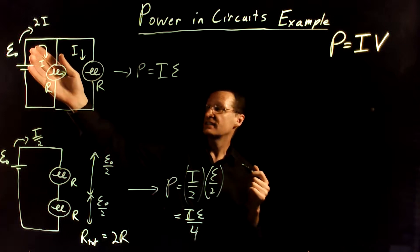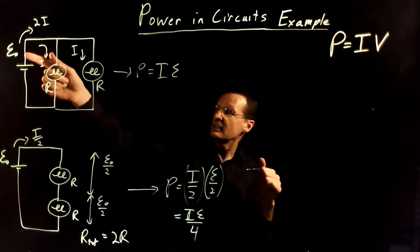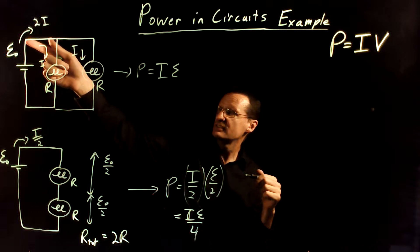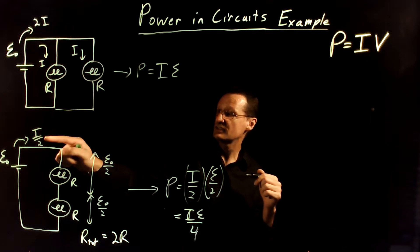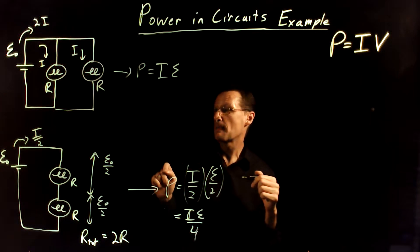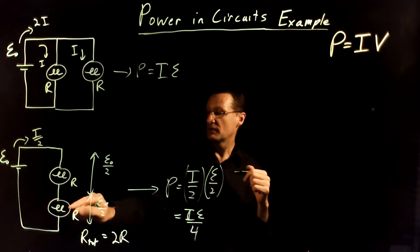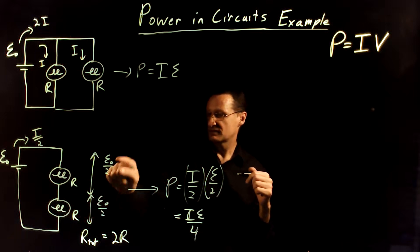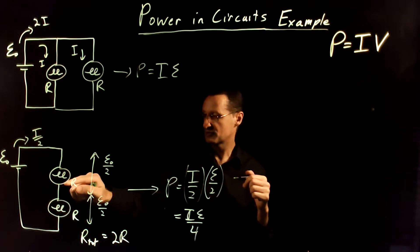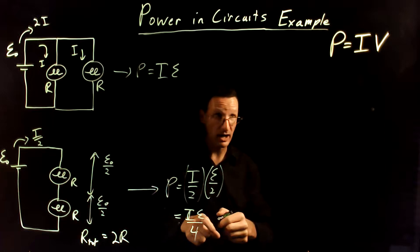Now, to be fair, you can see this pretty clearly here, because this is outputting twice the current, this is outputting half the current, whereas these bulbs are, the voltage drop is half as much, half of the voltage is dropping across each of these. So, that's the source of why.